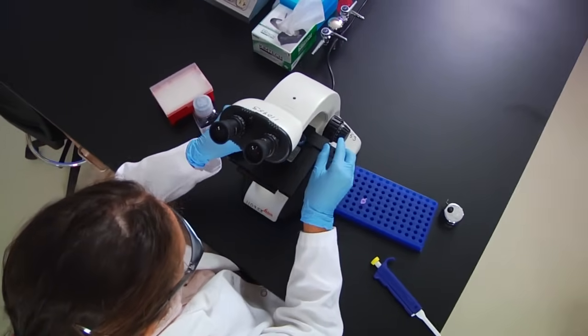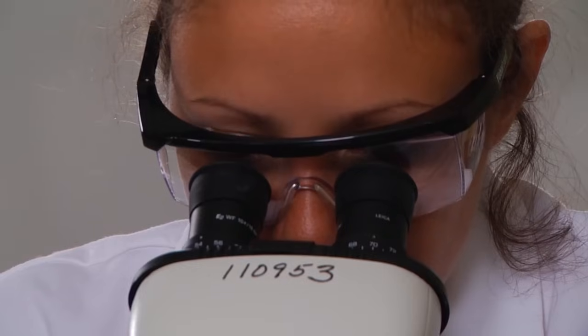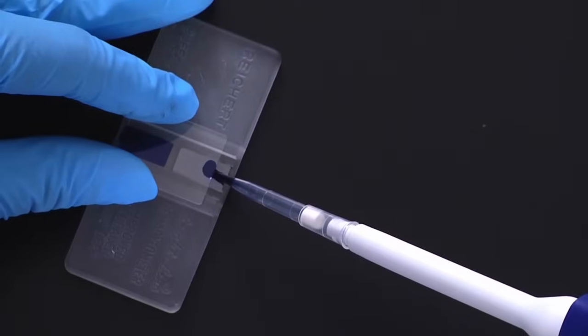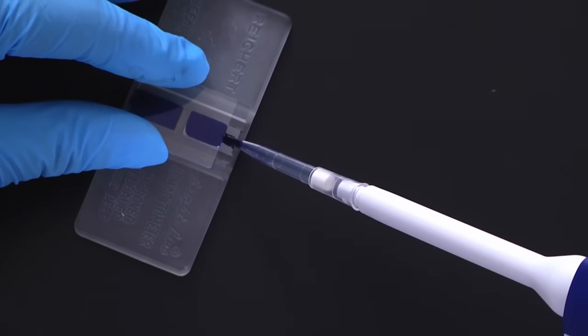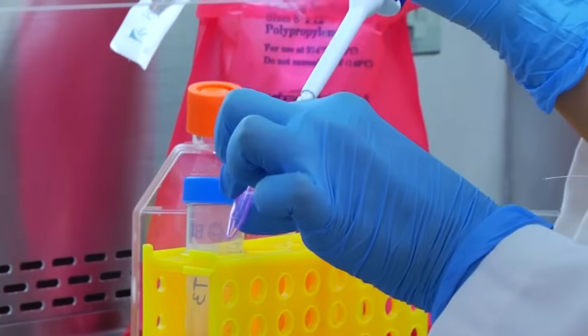A hemocytometer is a device that is used for counting cells. It's a modified microscope slide containing two identical wells or chambers into which a small volume of cell suspension is pipetted.